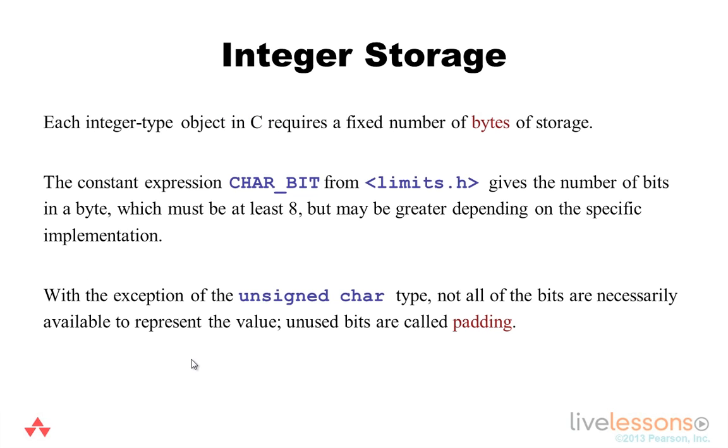Each integer type in C requires a fixed number of bytes of storage to represent it. The constant expression CHAR_BIT, which is defined in the standard limits.h header, gives the number of bits in a byte, which has to be at least 8 but can be larger depending on the specific implementation. An implementation refers to a compiler and associated libraries.